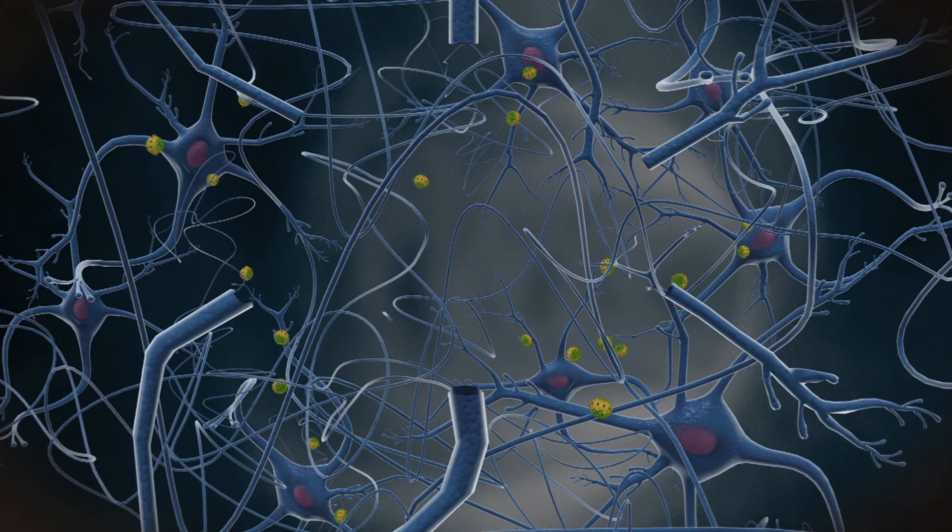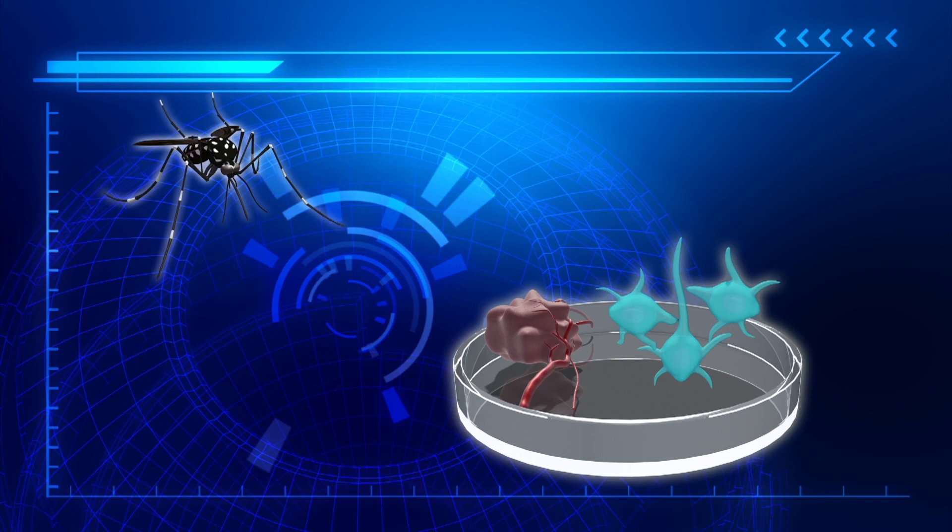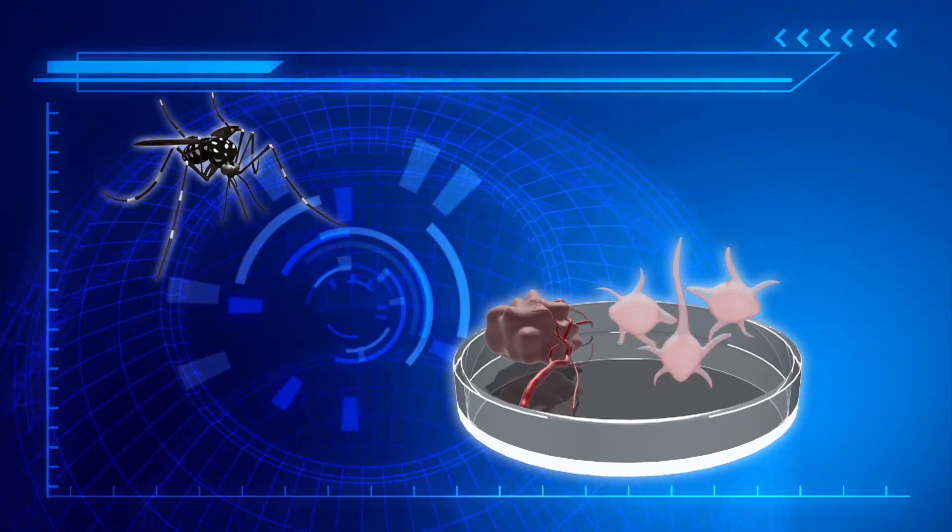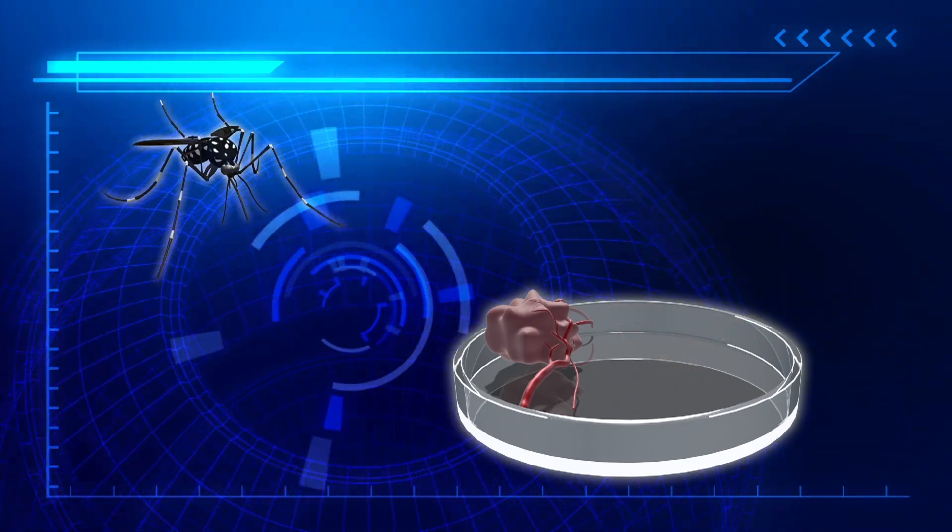This prompted scientists to hypothesize that it may also be able to target glioblastoma stem cells. Scientists infected tumors with one of two Zika virus strains and found that both destroyed stem cells while bypassing other tumor cells.